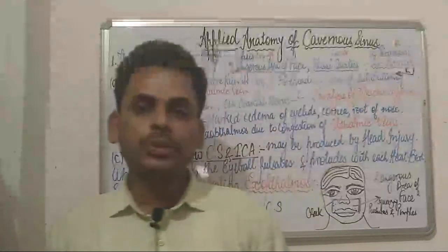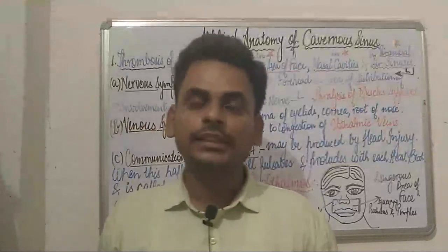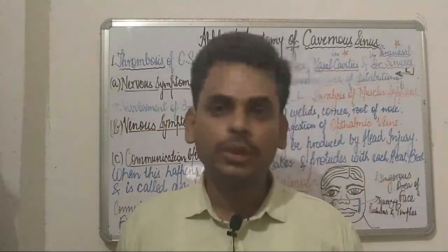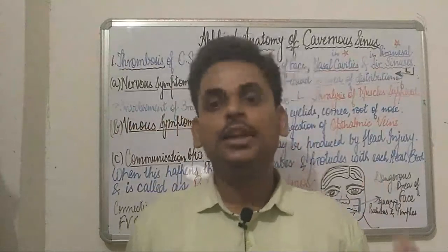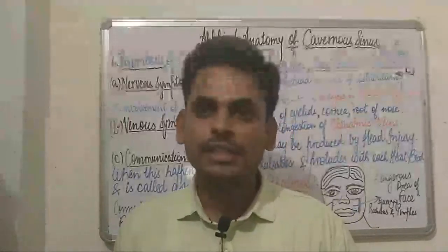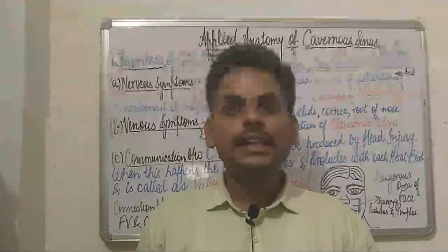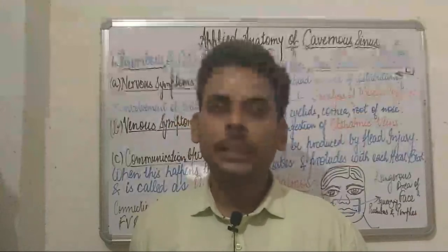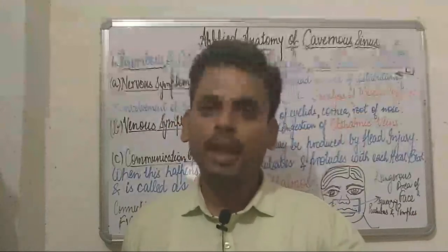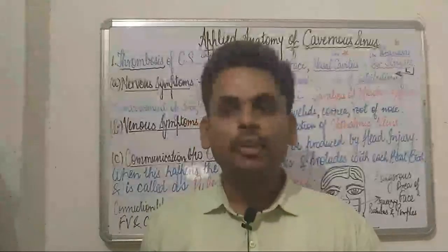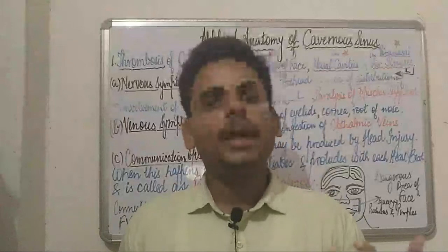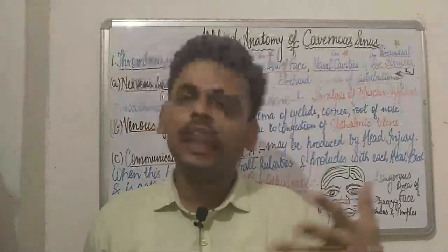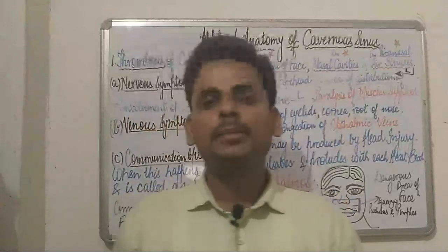The cavernous sinus is a dural venous sinus. It is one of the paired dural venous sinuses lying in the body of the sphenoid bone. Internally, this sinus is divided into a number of spaces or caverns by trabeculae, and these trabeculae are very prominent in the dead as compared to the living.